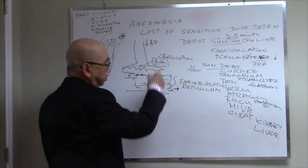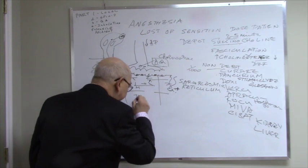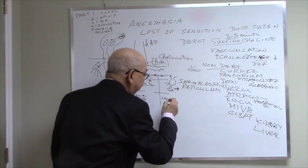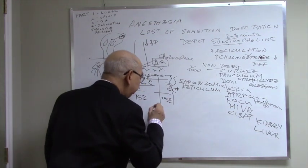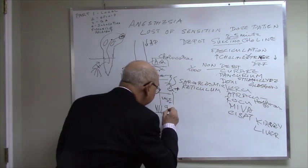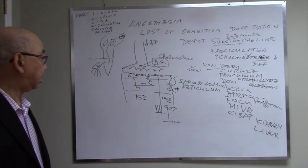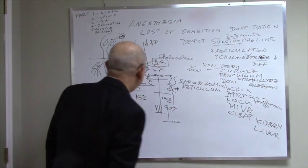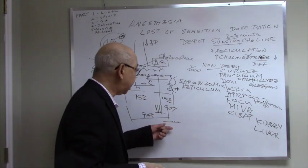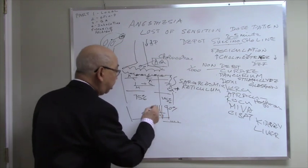The neuromuscular junction is very resilient and has a lot of reserve. You can block 75% of it and if you only have 25% function, the muscle will still contract normally. When you get to 90% block, then you don't have neuromuscular function. So to produce muscle relaxation, you have to block 90% of the receptors. You give a dosage enough to block 90%.